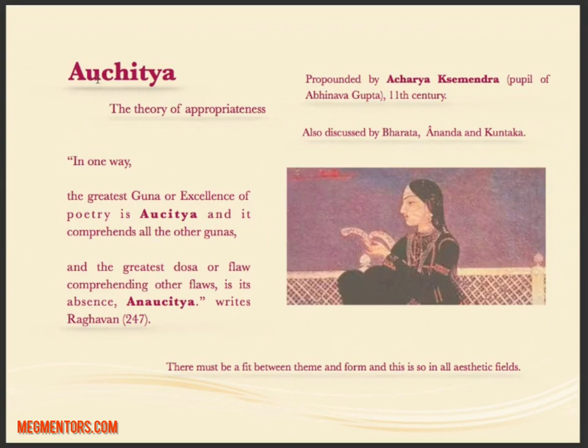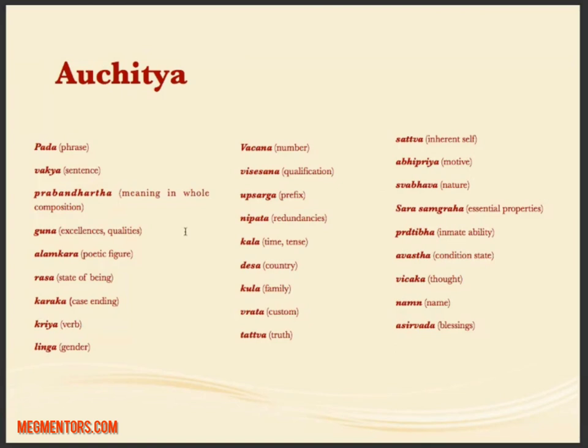Auchitya means the theory of appropriateness. This theory is proposed by Acharya Kshemendra, a student of Abhinav Gupta. He says the greatest good or excellence of poetry is Auchitya — poetry should be appropriate and make sense. Its greatest flaw is the absence of Auchitya, which is Anuchitya. There should be a coherence between the theme and the form. Types of Auchitya include Pad (phrase), Vakya (sentence), good qualities, Alankar (figures of speech), Ras, Bhava (state), Ling (gender), Vachan (number), and other grammatical elements.